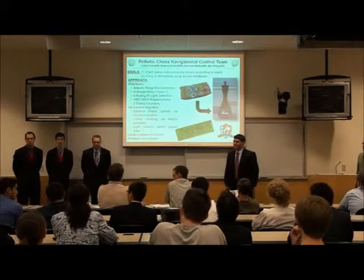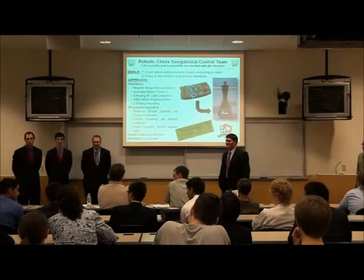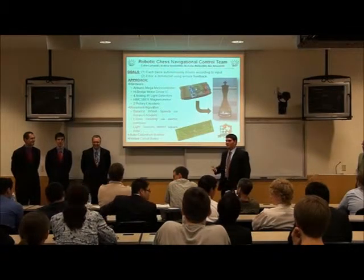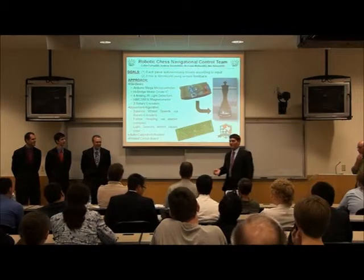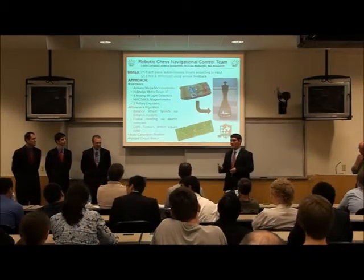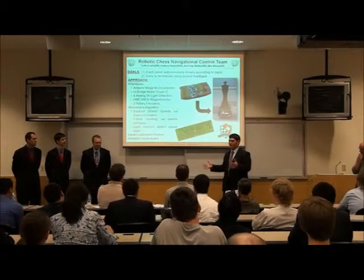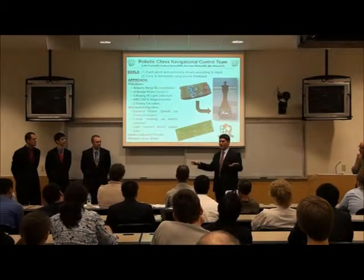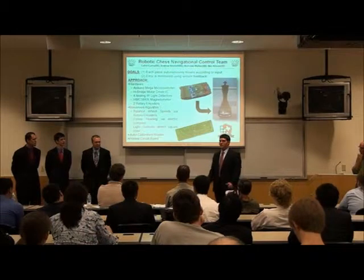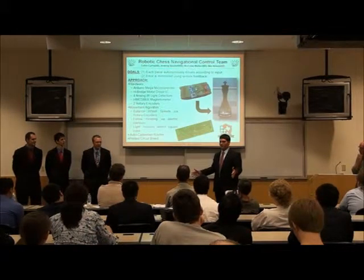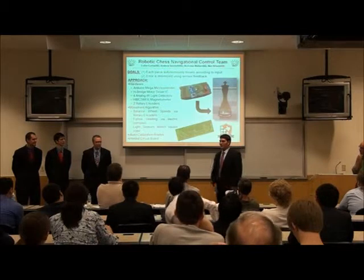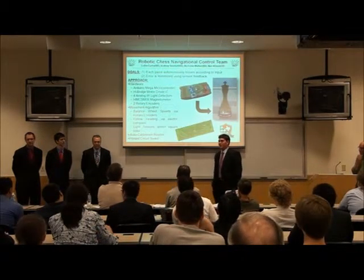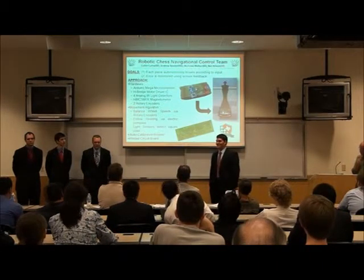Question: At the end of the game, when someone has won and pieces are off to the side, can you hit a reset button and have everything reset properly? Right now we haven't decided how we want taken pieces to operate. The main issue is that the white squares are the same color as the bordering tiles, so once a piece leaves the chess board, it can't detect its position. For now, you'd just manually place pieces back where they're supposed to be, but that could be something for another team to figure out.